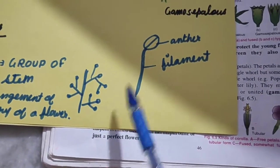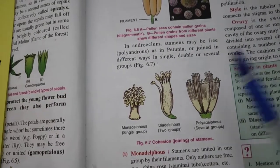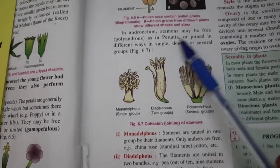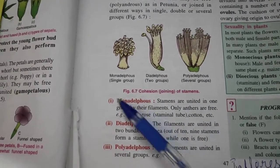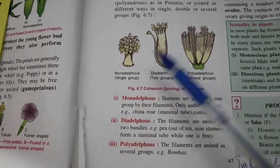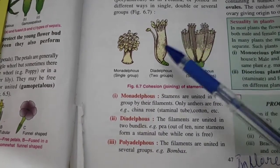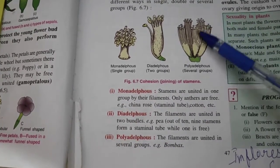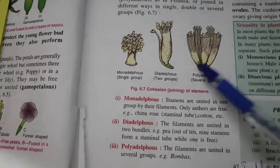Androecium. Stamens may be free, polyandrous. Or they may be joined in different ways: in single, double or several groups. According to this, different conditions are there. Monadelphous: when stamens are united in one group by their filament. As you see here, single group. Then diadelphous: the filaments are united in two bundles, one and two. Polyadelphous: the filaments are united in several groups. As you can see here, many groups are there.